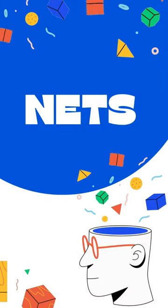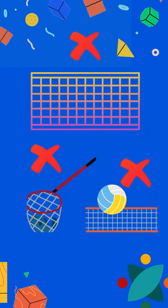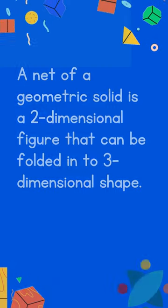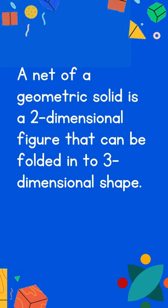Hey kids, let's learn about nets today. What do you think a net is? It's not a mosquito net or fishing net which you are aware of. A net is a two-dimensional shape that can be folded up to make a three-dimensional shape.